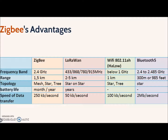Compared to LoRaWAN or Z-Wave, which use several different frequency bands in different locations, Zigbee mostly uses the same frequency bands, making it simpler. And compared to Bluetooth 5 and Wi-Fi 802.11ah, which are designed for IoT devices, these two technologies are still new to the market and how well they perform in smart systems and IoT devices is still questionable.